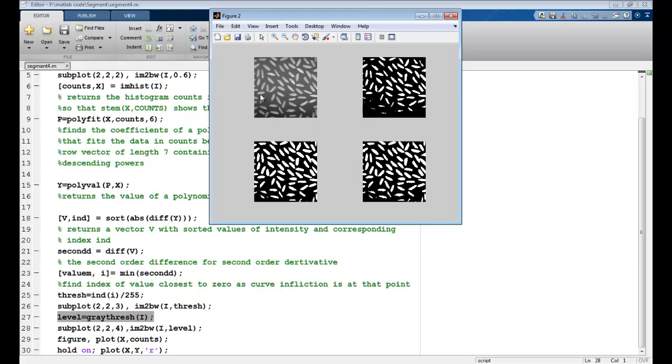So you can see here, this is my original image. This was using the heuristic. This is using my threshold, which we have calculated using the polynomial fit. And this is using the OTSU segmentation. So this does pretty well.